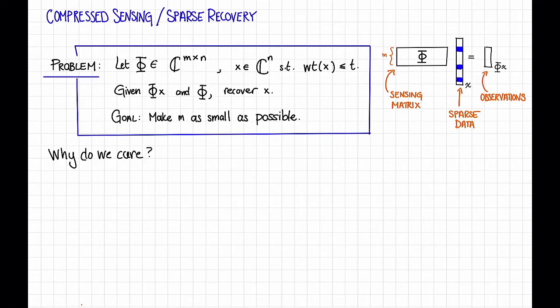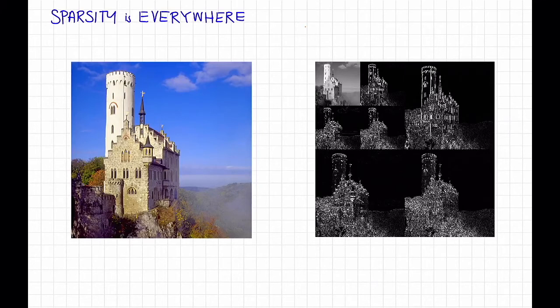In particular, it comes from the fact that lots of naturally occurring data are sparse. And here by sparse, I mean mostly zero or mostly close to zero. For example, many natural images are sparse, or at least sparse when you write them in the correct basis.